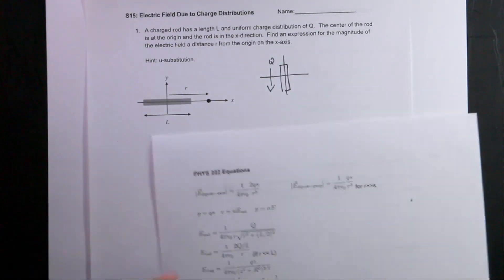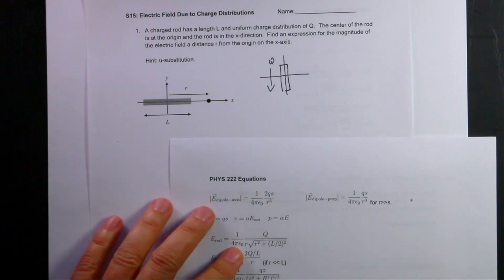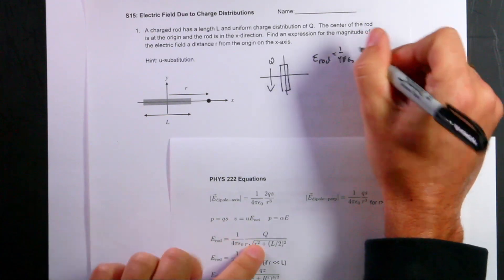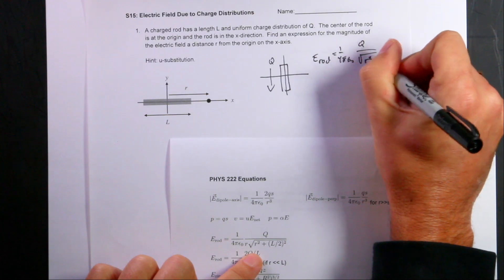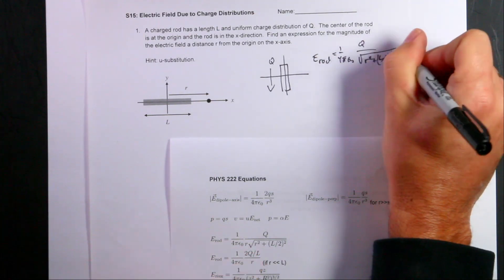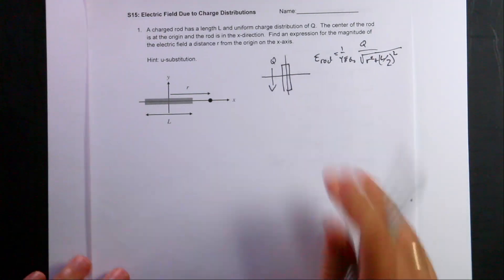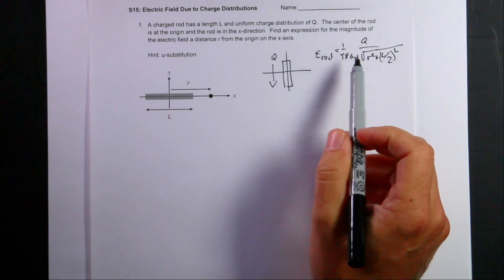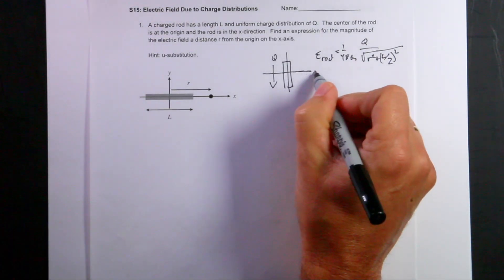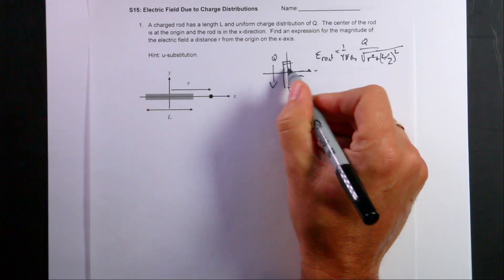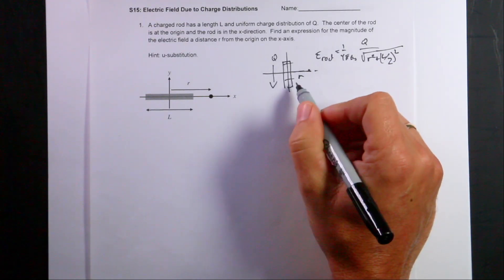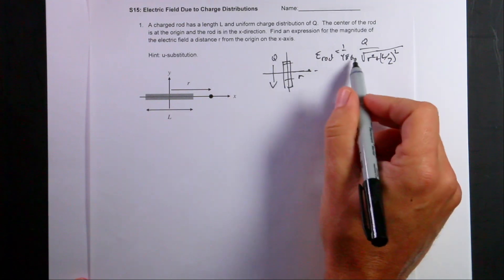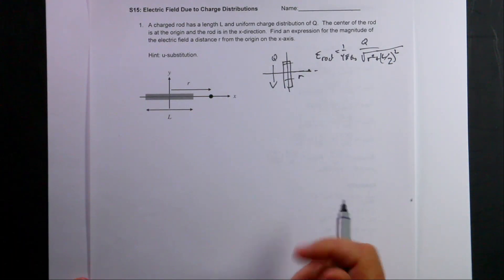The magnitude of the electric field for the rod is 1 over 4π epsilon-naught times Q over the square root of R squared plus (L/2) squared. But you have to be careful: just because this says 'electric field due to a rod' doesn't mean we can use it here. This formula is for the field perpendicular to the axis, not along it. So it's a different problem — you can't just take this formula and use it.